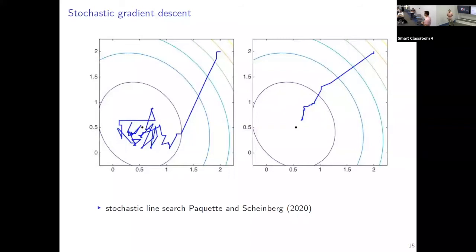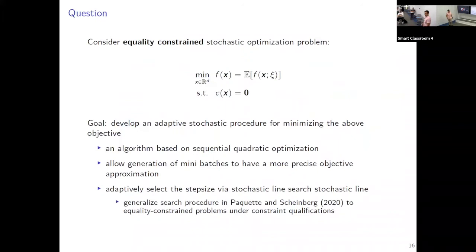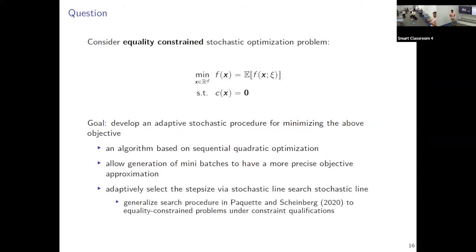In today's talk, I'll explain how we can extend these ideas and develop a line search procedure for optimization problems with constraints. Now let's look into our constrained problems. We have a stochastic optimization problem where the objective is stochastic and the constraints are deterministic. How can we develop a procedure that will not require fine-tuning of parameters? The algorithm will be based on sequential quadratic programming (SQP), a framework very popular for handling constraints.